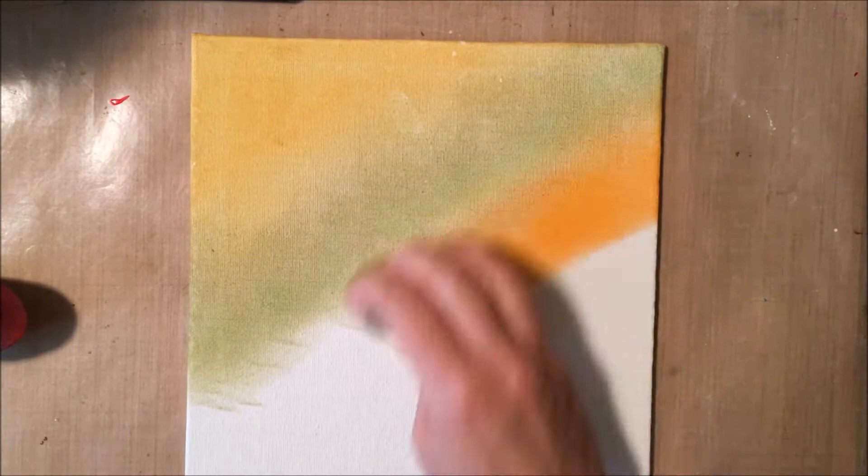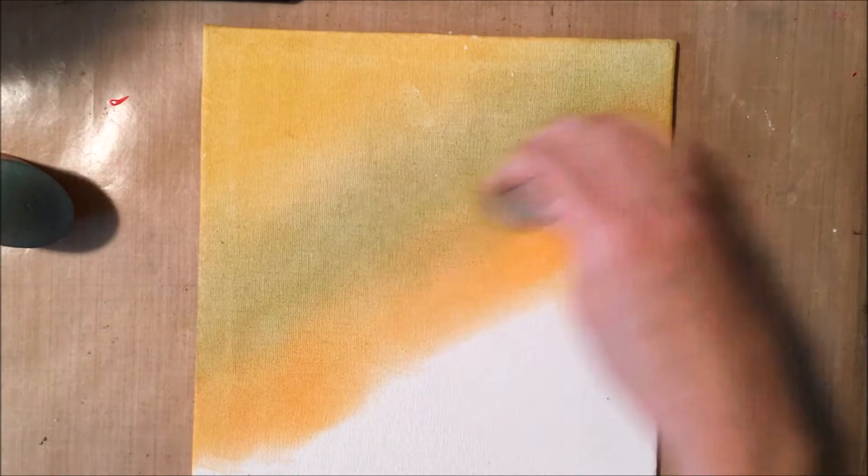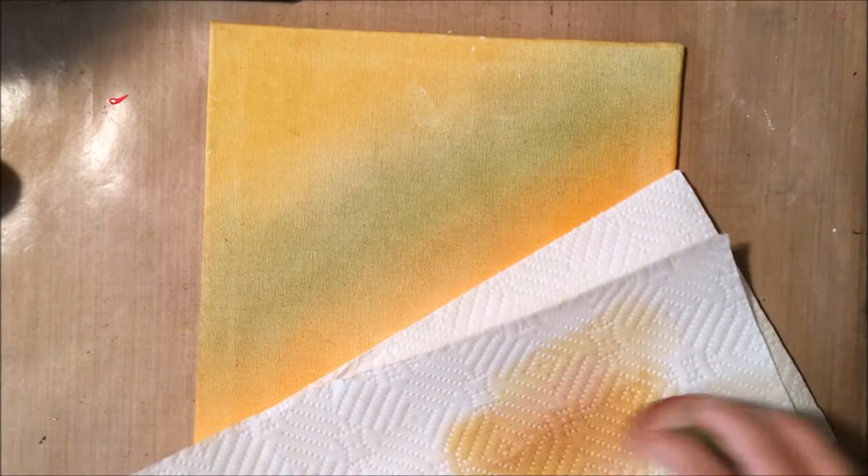So pan pastels are just that. They are a pastel. They are very chalk-like. You just need to really pat the foam onto the color and it picks up onto the foam pad and you can apply it.